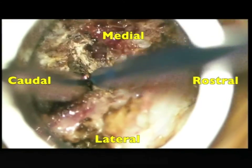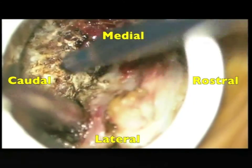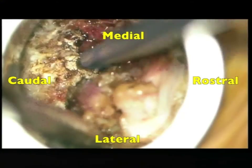The soft tissues are carefully dissected off the underlying lamina. The high-speed drill is utilized to remove the caudal end of the rostral lamina down to the depth of the ligamentum flavum.